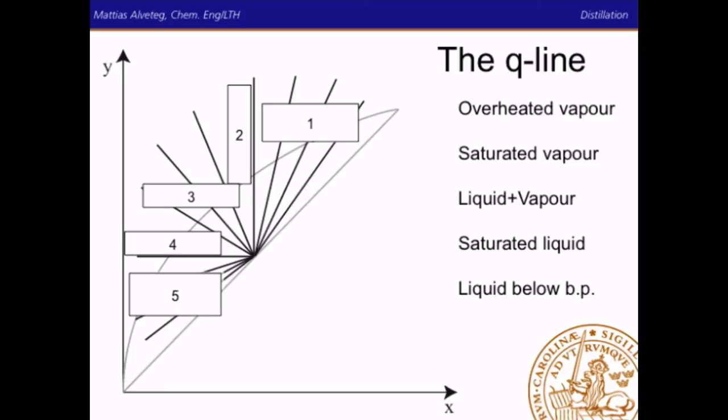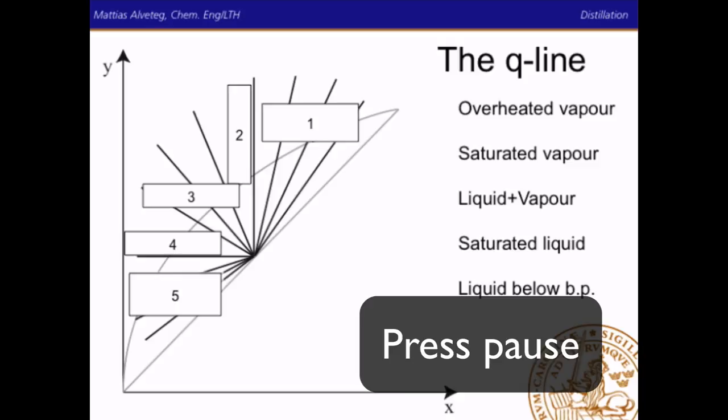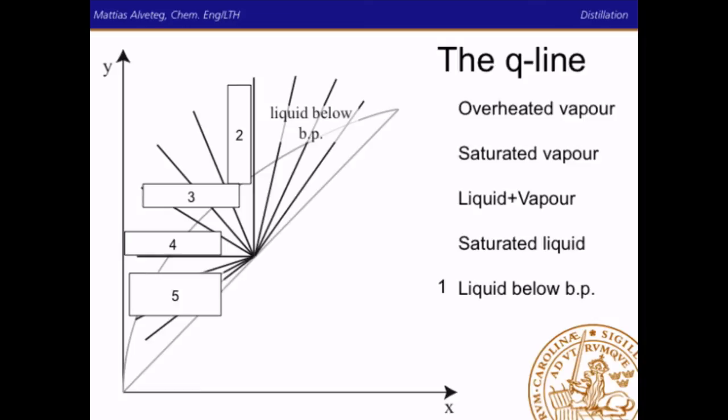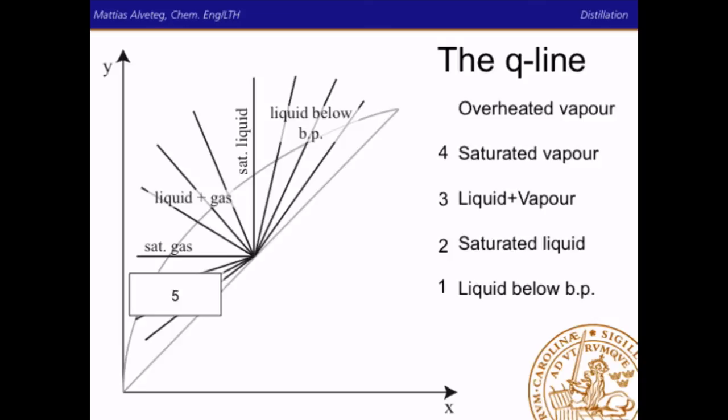The Q line has a certain slope depending on the feed conditions. For liquid below boiling point, saturated liquid (a vertical line — all points have the same liquid composition), liquid plus vapor, saturated vapor (a horizontal line — all points have the same gas composition), or overheated (superheated) vapor. Try to figure out which slope corresponds to which condition. Liquid below boiling point has the steepest positive slope, saturated liquid is vertical, liquid plus vapor is in between, saturated vapor is horizontal, and superheated vapor has a negative slope.